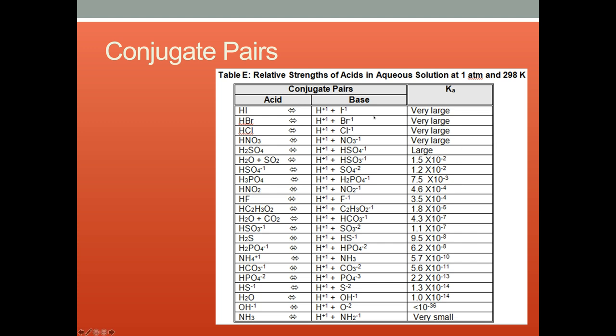For example, HI ionizes completely into H+ + I-. Since the ionization is complete, Ka is very large. The same thing happens with HBr, HCl, HNO3 and to the most extent H2SO4. The ionization is complete. But as Ka gets smaller, the ionization of the acid becomes less and less.